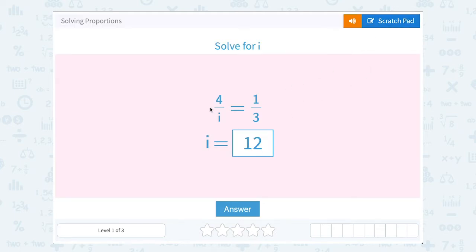If you wanted to check this, you could say 4 over 12 is it equal to 1 third. And yeah, 4 is a third of 12.